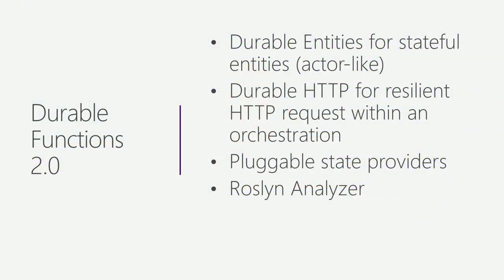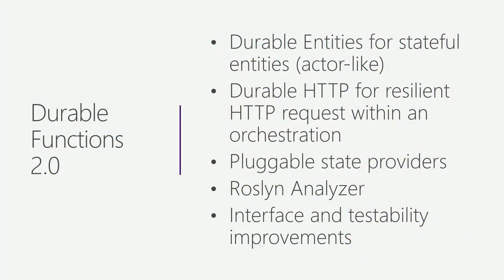We're shipping a Roslyn Analyzer that will evaluate your code in Visual Studio or VS Code as you write it to let you know of common pitfalls — like if the code you wrote isn't deterministic and might end up in a weird state during replay. The analyzer can detect that and show squiggly lines, which is fantastic. We've also made improvements around interfaces and testability so you can more easily write unit tests and implement interfaces for your Durable Functions.